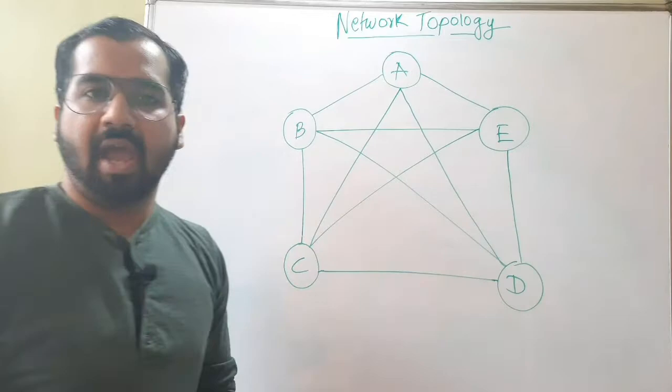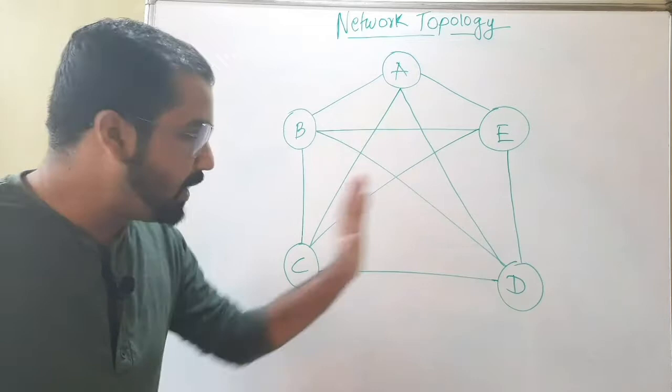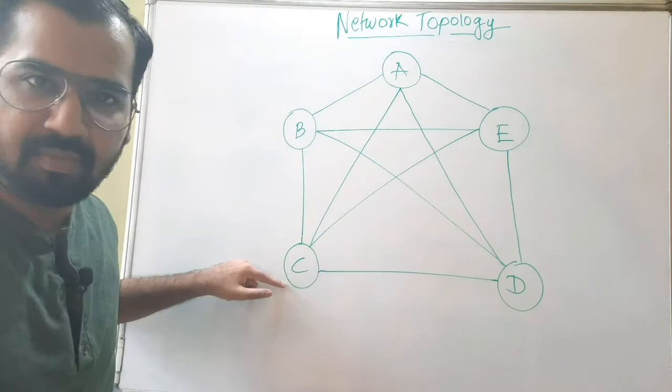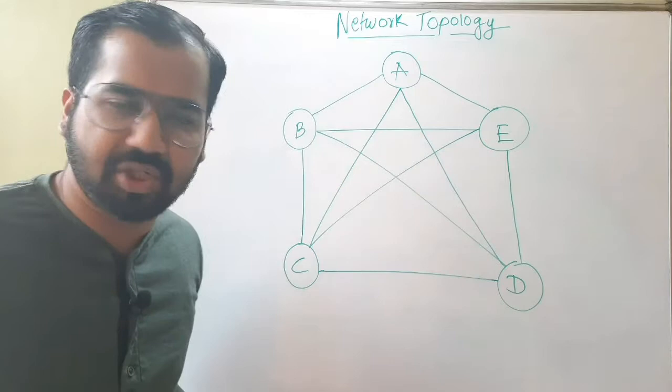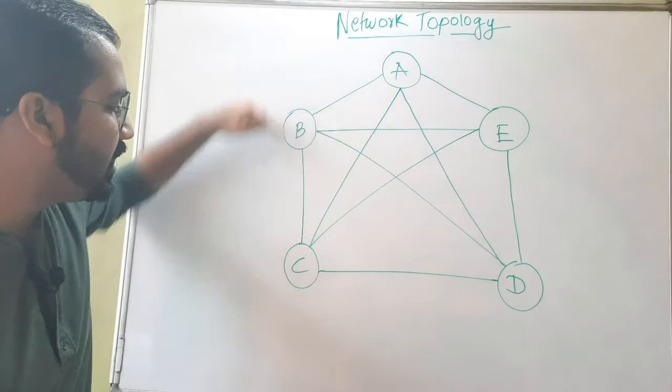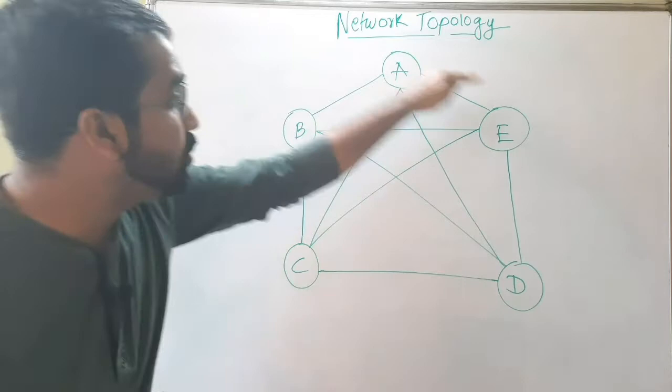Every node in the network is connected to every other node with a dedicated link — this applies to all nodes like B, C, and others. For example, if A wants to send something to C, it can use the direct link. If that link is not working, it can go A to B to C, or A to D to C, or even A to E to D to C. There are multiple redundant paths available.